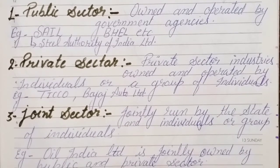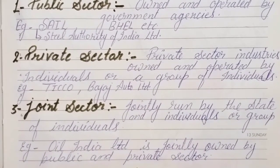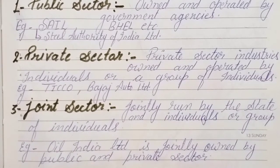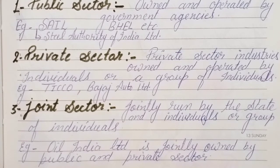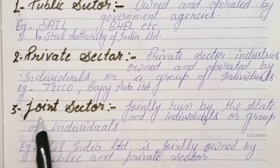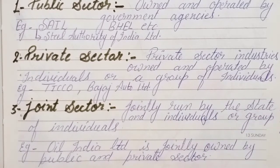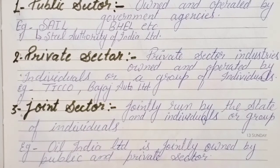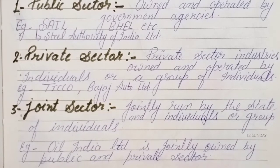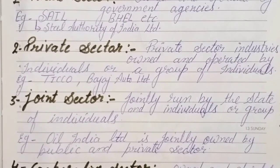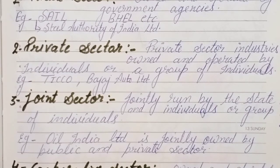Joint sector industries are jointly run by the state — that is, the government — and individuals or a group of individuals. Both the government and private individuals own a share, with a fixed percentage for each. For example, Oil India Limited is jointly owned by the public and private sector — that is called a joint sector industry.